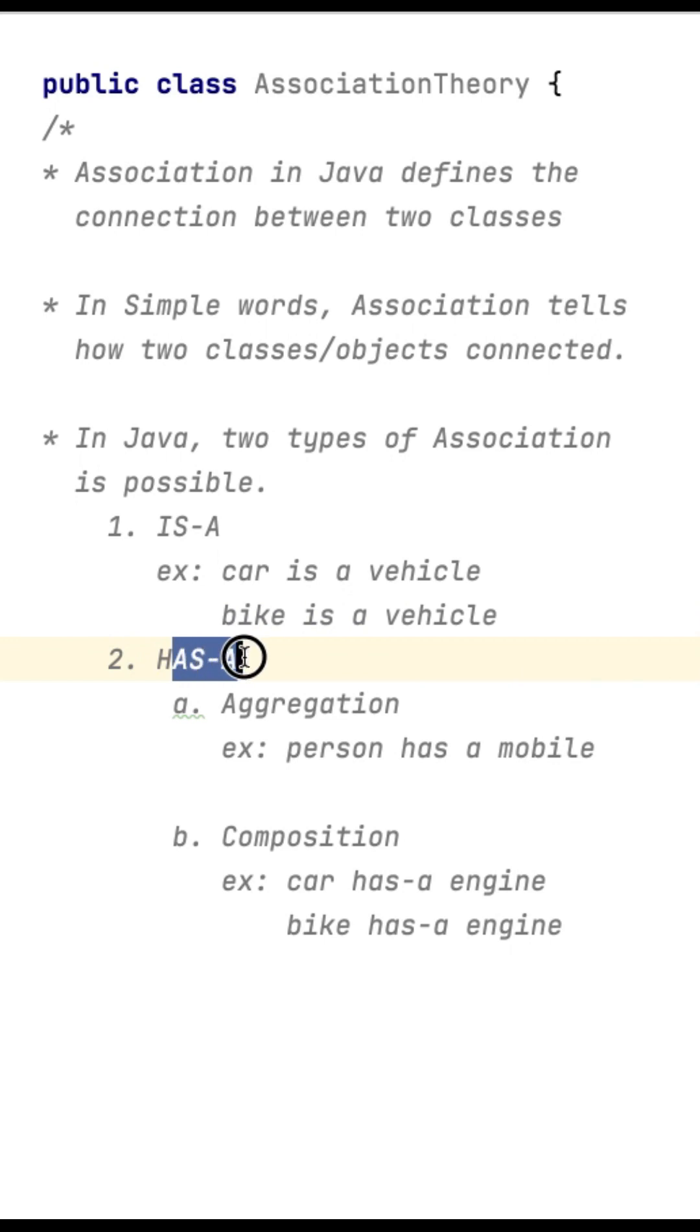Similarly, there is a HAS-A relationship. HAS-A relationship is again classified into two different types. One is aggregation and another one is composition.